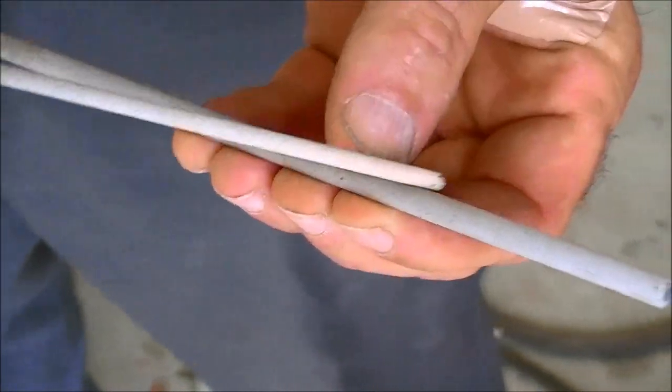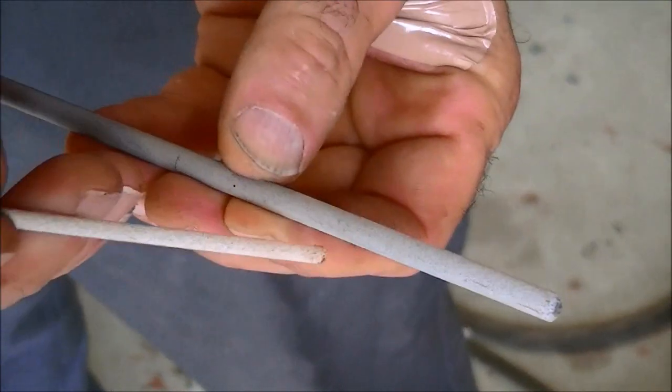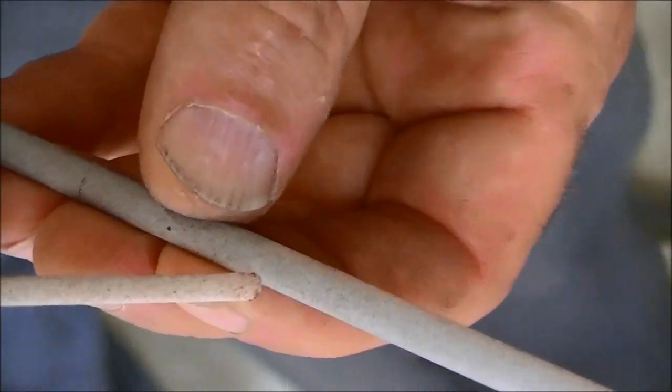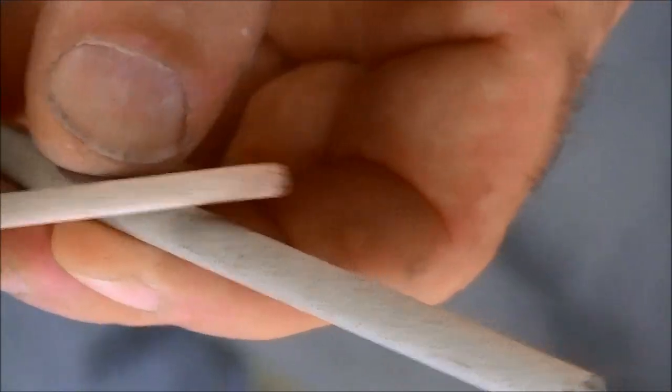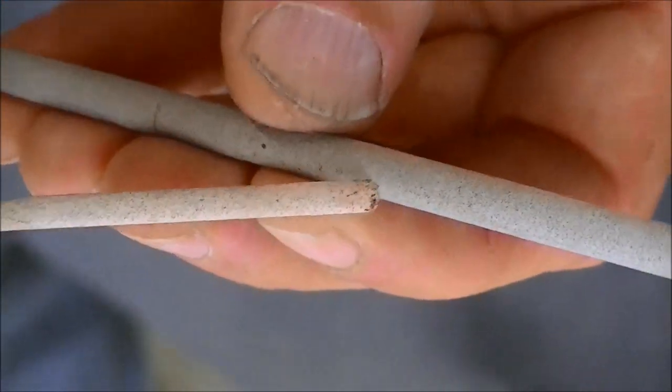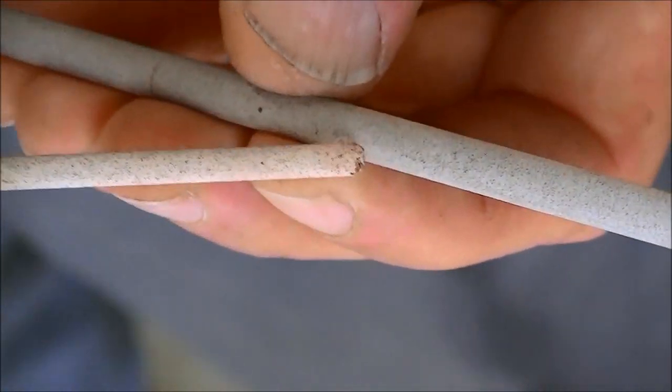With the 6011, you're having to strike an arc and then maintain a gap as you move along at the right speed and then feed it in as the rod is used up. So you've got to have hands as steady as a surgeon to weld.